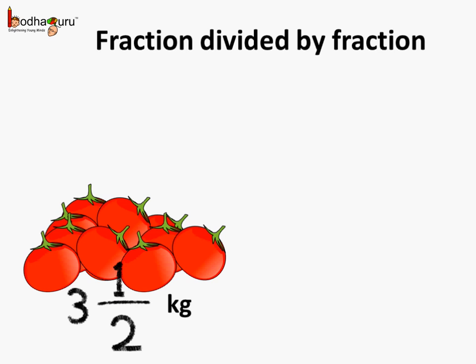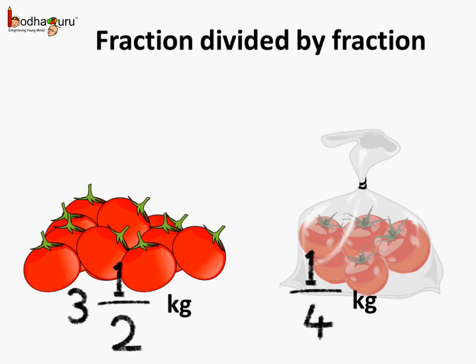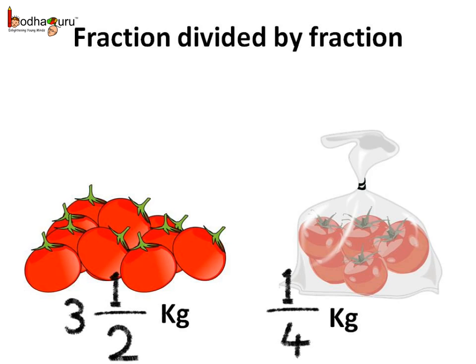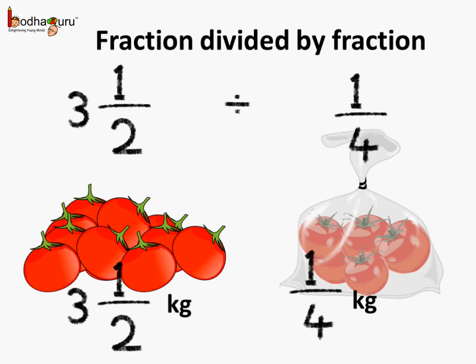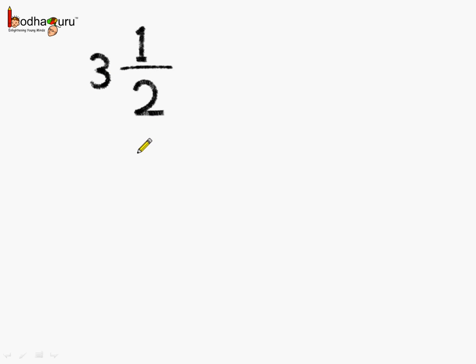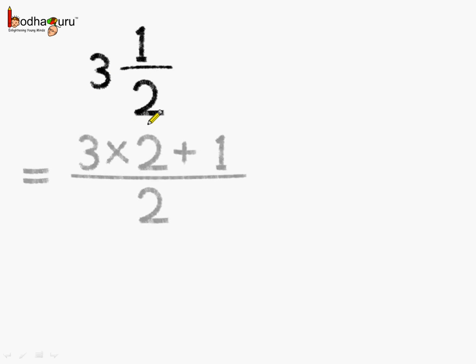Now let us take another example. Here there are 3 and a half kgs of tomatoes, and we need to make packs such that each pack contains 1 by 4 — that is, one-fourth kg of tomatoes. So how many packs will be formed? We need to find 3 and a half divided by 1 by 4. Since this is a mixed fraction, let us first convert it to an improper fraction: 3 and a half becomes 3 into 2 plus 1 by 2, which is 7 by 2.